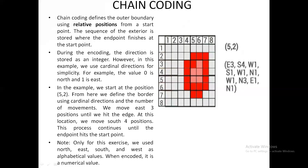While encoding chain coding data, the directions are also represented using an integer format rather than alphabets. For example, East can be represented as 101, so E3 would be written as '101, 3'. In this lecture we covered what is data compression, the types — lossless and lossy compression — and the four techniques for data compression: run length encoding, quadtree compression, block encoding, and chain coding. Thank you.